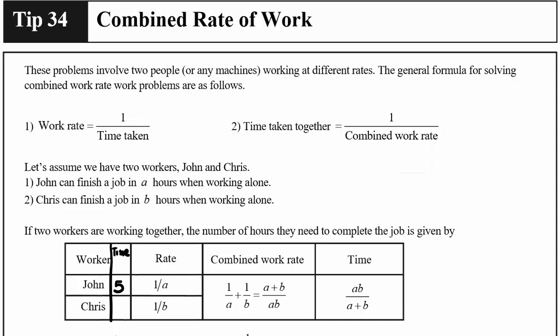Chris, if he works alone, takes ten hours to finish the painting. Rate is the reciprocal: what fraction of the job can be done in one day? John takes five hours, so in one day he can finish one-fifth. So one-fifth is John's rate. Chris's rate is one over ten.